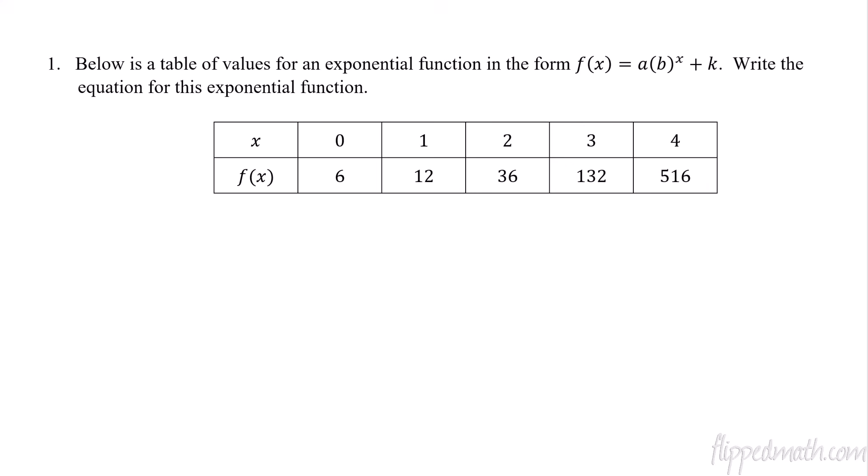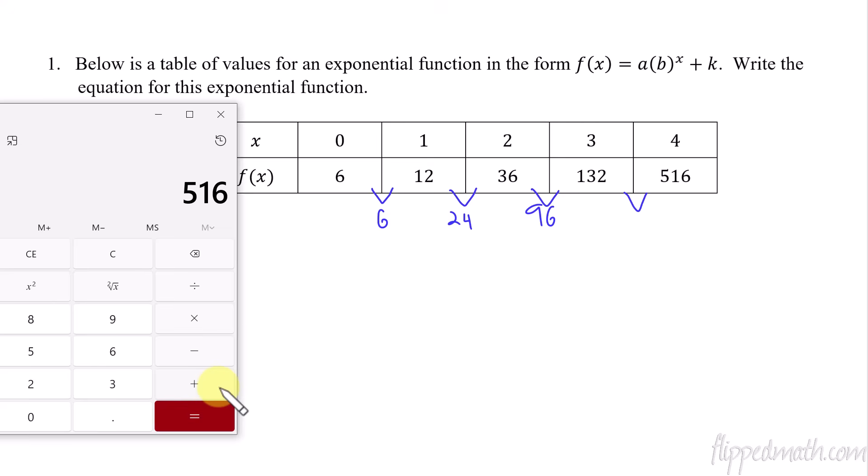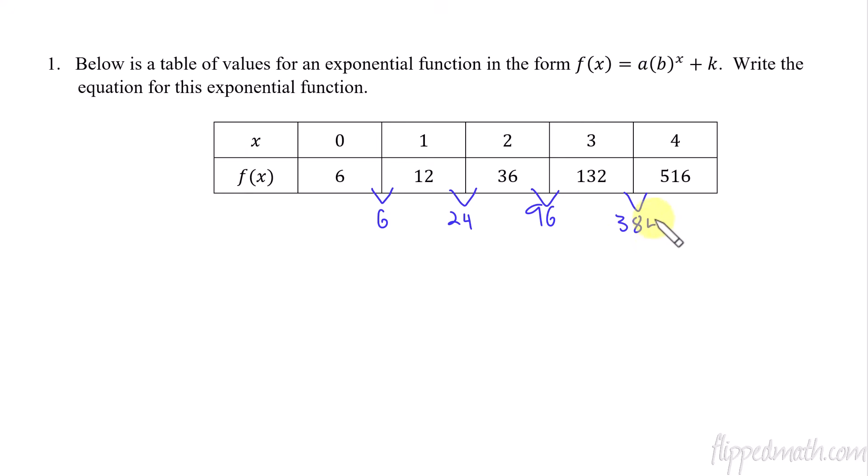So let me show you then, when you have a table, and we know it's in this form, a·b^x plus some number—we're going to shift it up or down—it's really hard to see what the equation would be. So I'll show you how we do this. First of all, let's find the difference between these. So from 6 to 12, that's 6. From 12 to 36, that is 24. From 36 to 132, that is 96. And then from here to here, 516 minus 132, 384.